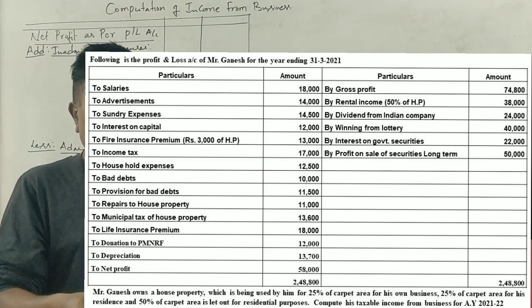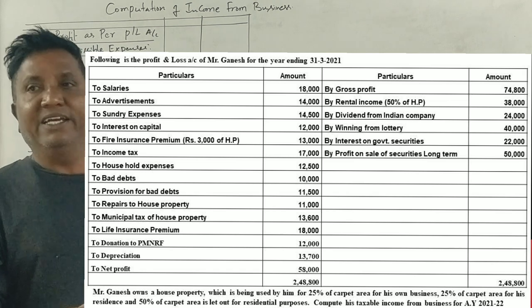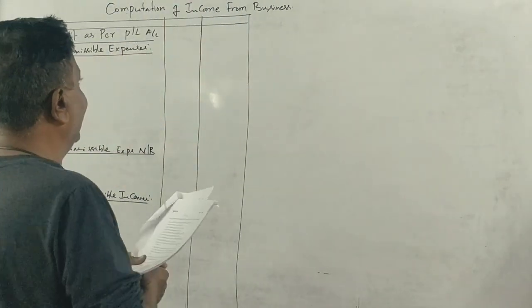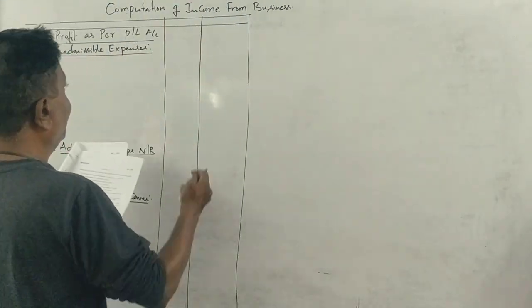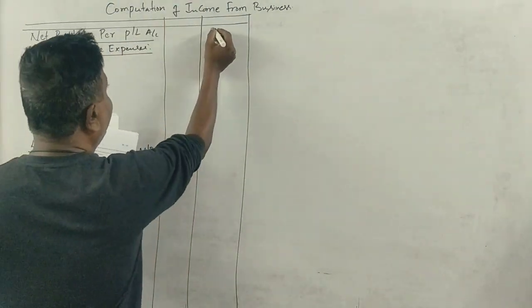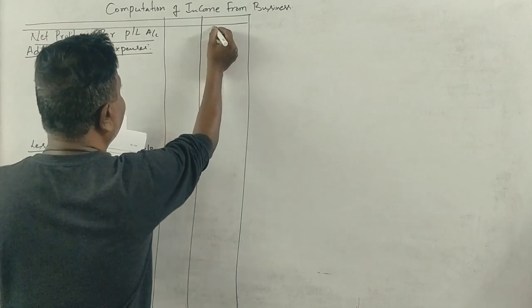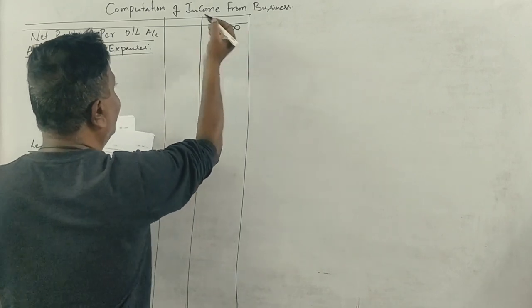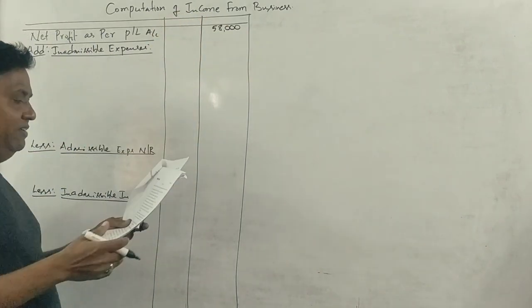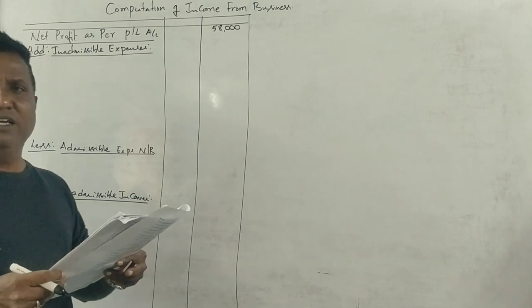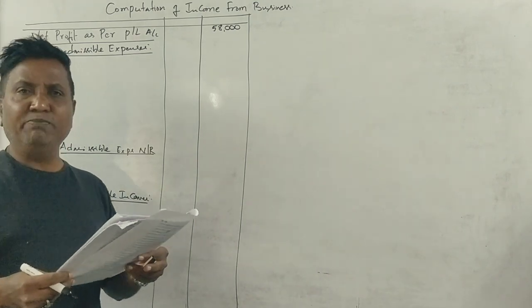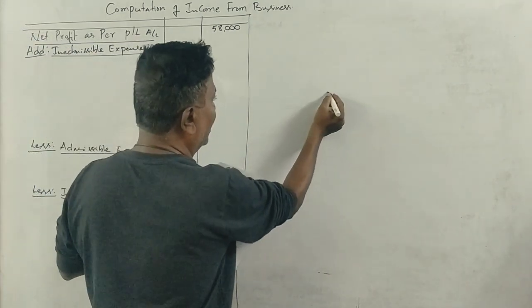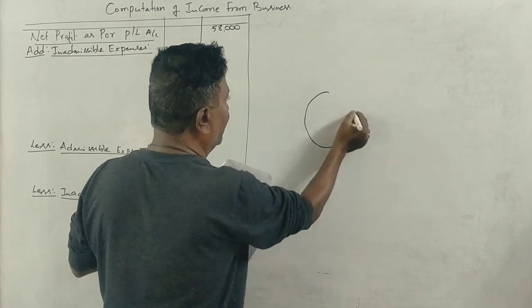The first step is to start with net profit. The net profit is Rs. 58,000. Now we will make adjustments. The adjustment is based on the proportion of use — 25 percent of the house is used for business purposes.